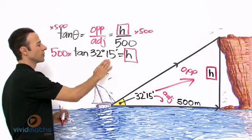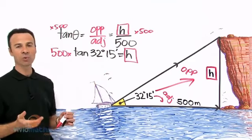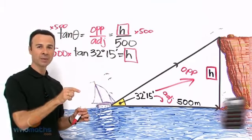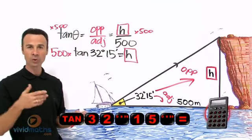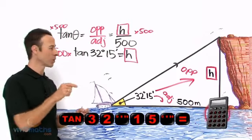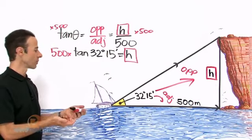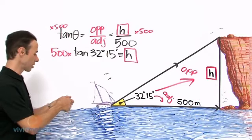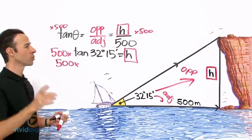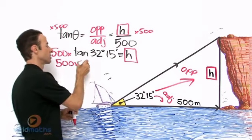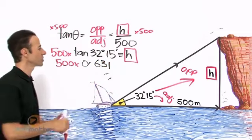Let's work out tan 32 degrees 15 minutes. The calculator process: we go tan 32, then press DMS (degrees minutes seconds), then press 15 DMS. The calculator processes it. 500 times tan 32°15' yields 0.631.